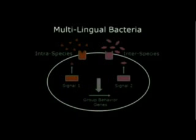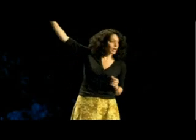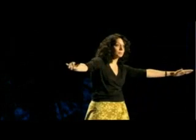The first strategy is we've targeted the intraspecies communication system. We've made molecules that look kind of like the real molecules, but they're a little bit different. They lock into those receptors and jam recognition of the real thing. By targeting the red system, we're able to make species-specific or disease-specific anti-quorum sensing molecules. We've also done the same thing with the pink system — we've taken that universal molecule and modified it to make antagonists of the interspecies communication system. The hope is that these will be used as broad-spectrum antibiotics that work against all bacteria.